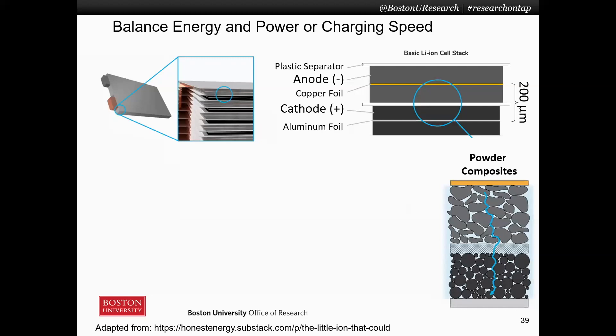Your anode, your cathode, as you see here, as well as your separator in a typical lithium ion battery, are porous. So they're soaked in a liquid that fills this porosity, and that liquid contains lithium salt, which allows your lithium ions during charge and discharge to toggle back and forth.